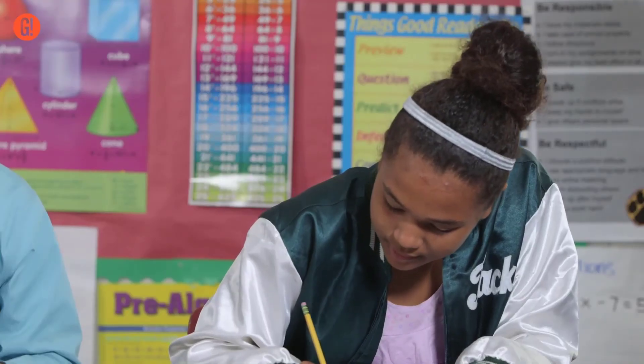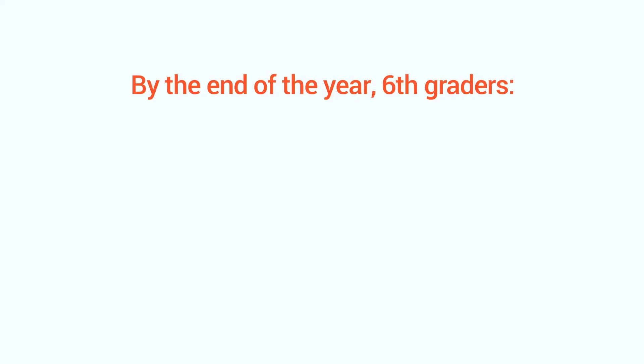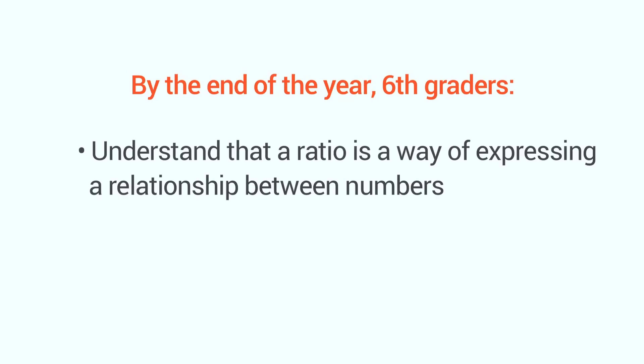So how do you know if your 6th grader really gets ratios? By the end of the year, 6th graders understand that a ratio is a way of expressing a relationship between numbers, and can talk about the meaning of ratios in context.